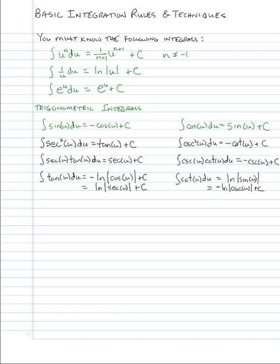The integral of tan(u) has two forms: −ln|cos(u)| + C, or equivalently ln|sec(u)| + C. Likewise, the integral of cot(u) is ln|sin(u)| + C, or alternatively −ln|csc(u)| + C. The top form is probably the most common in each case.